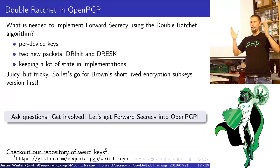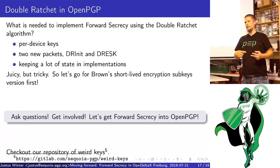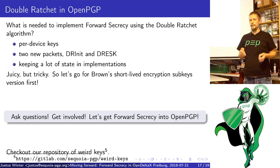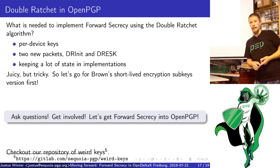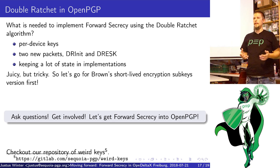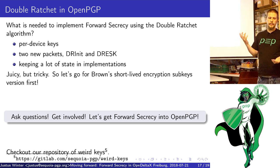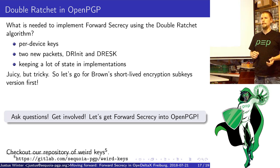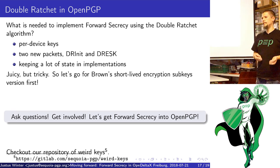What is needed for double ratchet in OpenPGP? First, we need per-device keys or a robust synchronization mechanism that can support synchronization on a per-message basis if we want to implement the double ratchet with shared keys — which I don't think is a good idea. We need two new packets: one for the initialization and one for encrypting the session keys. In a paradigm shift, we need to keep a lot of state in OpenPGP implementations — and this is going to be a hard sell. The double ratchet algorithm, which also provides backward security, is a nice thing to aim at, but let's go for the first simple solution.